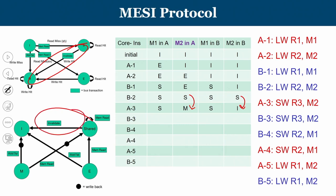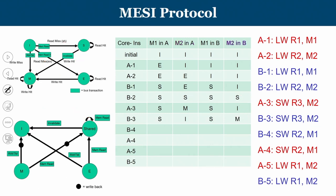B3 also performs a write — a store to M2. When B3 checks M2, it is already in the invalid state, so this is a write miss. B must move from I to M. Meanwhile, A was holding M2 in the Modified state, so A sees the write-with-intention-to-modify request on the bus and transitions its M2 from M to I. After B3, B holds M2 in the M state and A's M2 is in the I state.